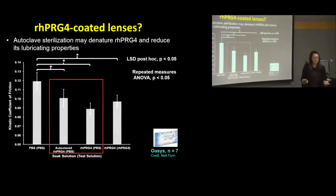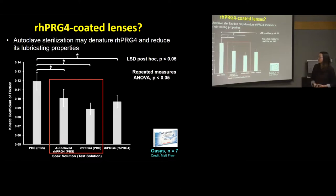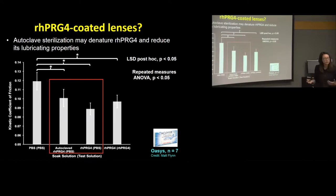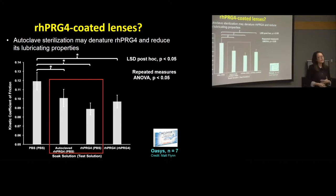Over the summer, we did a series of tests comparing autoclaved and non-autoclaved RH-PRG4. Looking at the kinetic coefficient of friction under different lens testing conditions, lenses soaked in RH-PRG4 that was then autoclaved showed a trend toward higher friction compared to non-autoclaved RH-PRG4, though the difference was not statistically significant. From these tests, we decided to pivot away from the lens coating approach and focus on the two remaining options.